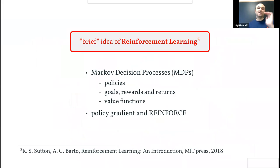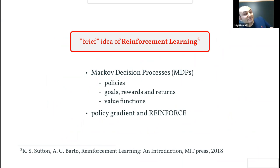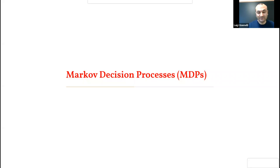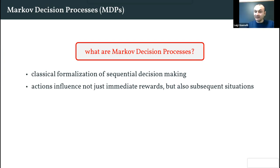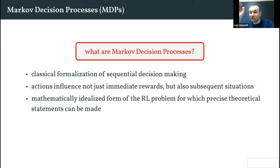Now I will give a brief introduction to reinforcement learning, covering Markov decision processes, policies, how goals connect to rewards and returns, value functions, and the REINFORCE algorithm. Markov decision processes (MDPs) are a classical formalization of sequential decision making where actions influence not only immediate rewards but also subsequent situations far into the future. They are a mathematically idealized form of the reinforcement learning problem.